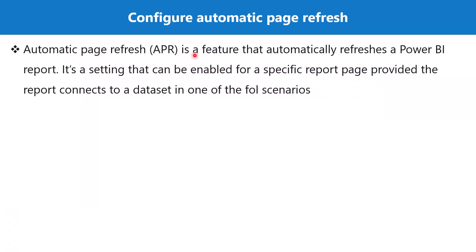Automatic page refresh is a feature that automatically refreshes a Power BI report. It's a setting that can be enabled for a specific report page, provided that the report connects to a dataset in one of the following scenarios.